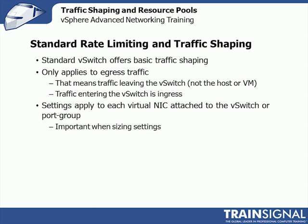These settings apply to each virtual NIC attached to the vSwitch or port group. It's important to understand this for sizing. If you say the average is 100 megabit, every VM that connects into that vSwitch or port group averages 100 megabit — it is not a global or switch-wide setting. It is a per-VM or per-connection setting, so you have to take a look at the cumulative effect of all of these together.